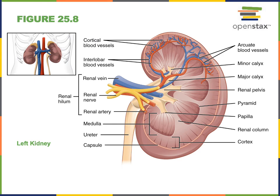The nephron is the microscopic structure in the kidney that filters blood and produces urine. The last part of the nephron drains into the collecting duct, which carries the liquid out through the renal papilla. At this point the liquid is urine — fully processed. Urine flows from the renal papilla into minor calyces, which come together to form major calyces, which then come together to form the renal pelvis that attaches to the ureter.